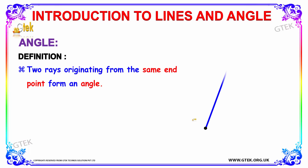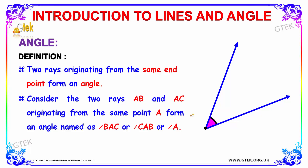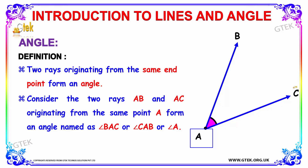Now let's discuss about angle. The definition of an angle is that two rays originating from the same end point form an angle. You can see the two rays — AB is one ray and AC is another ray. These two rays originate from the same end point A, and they form an angle.